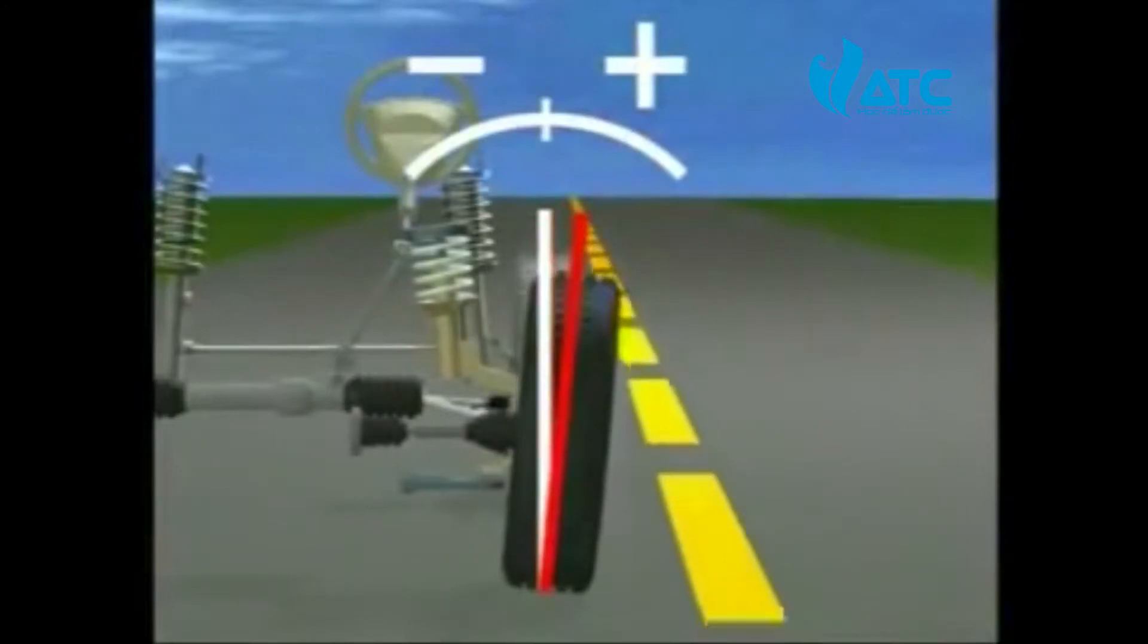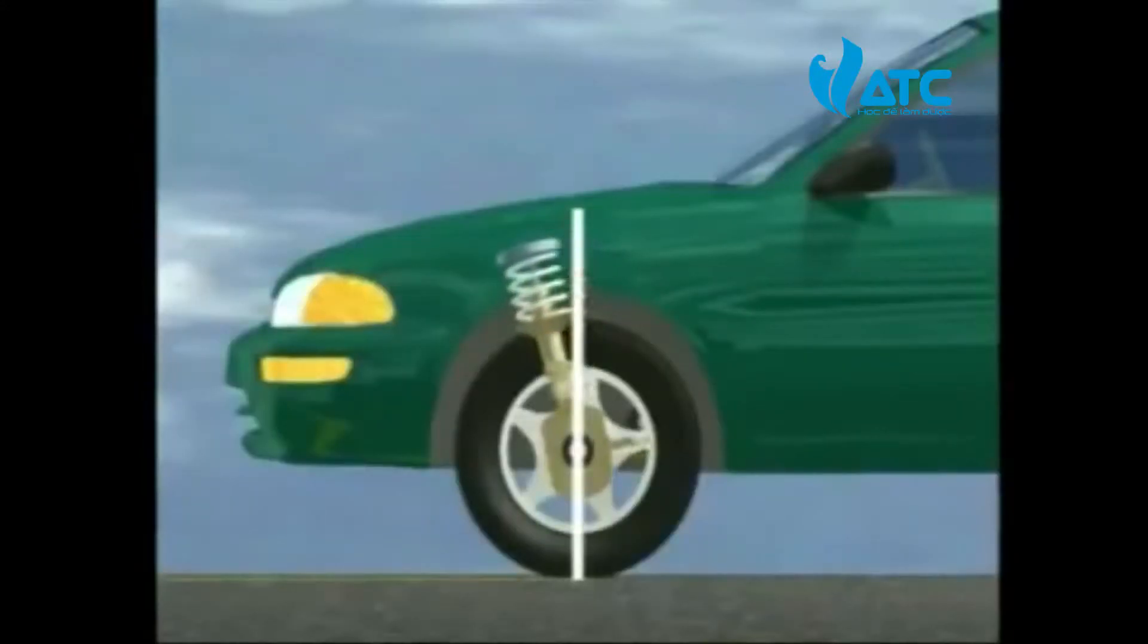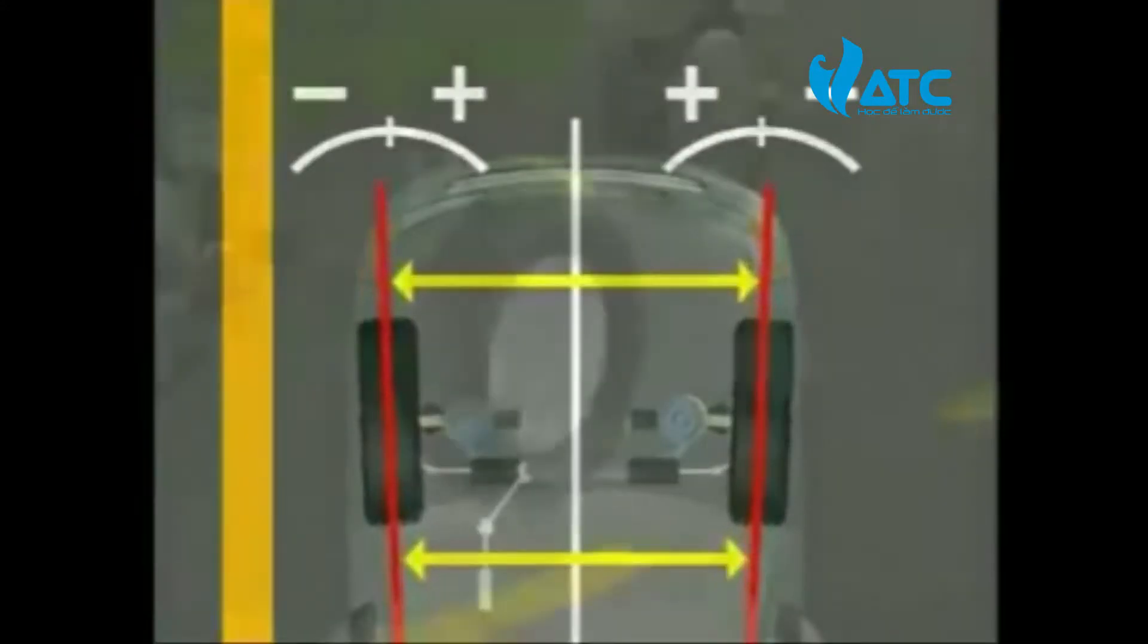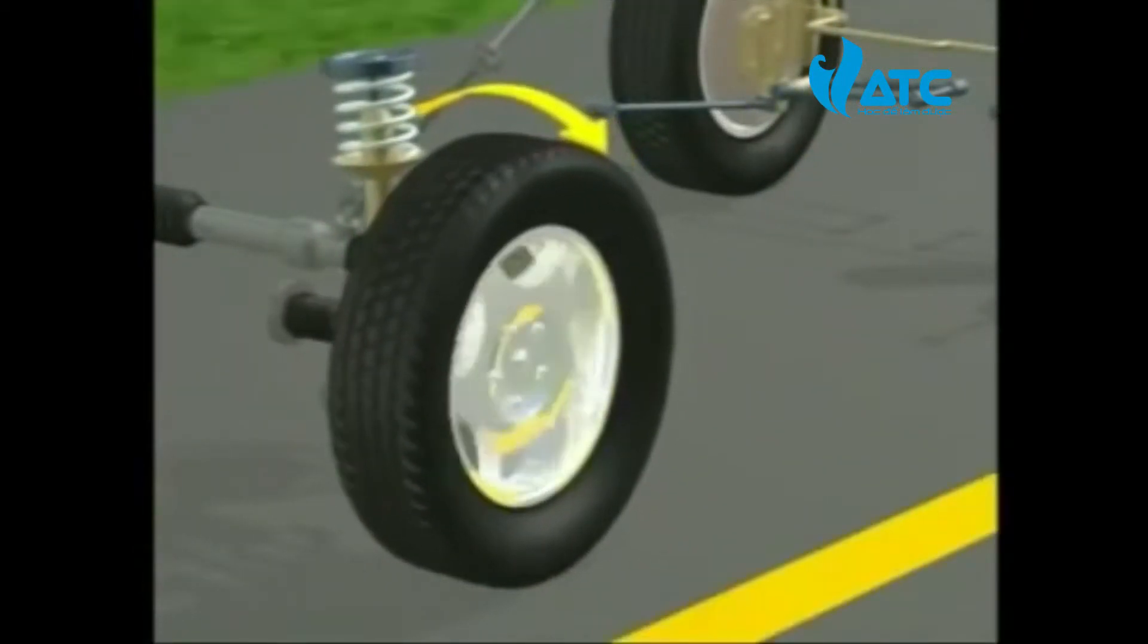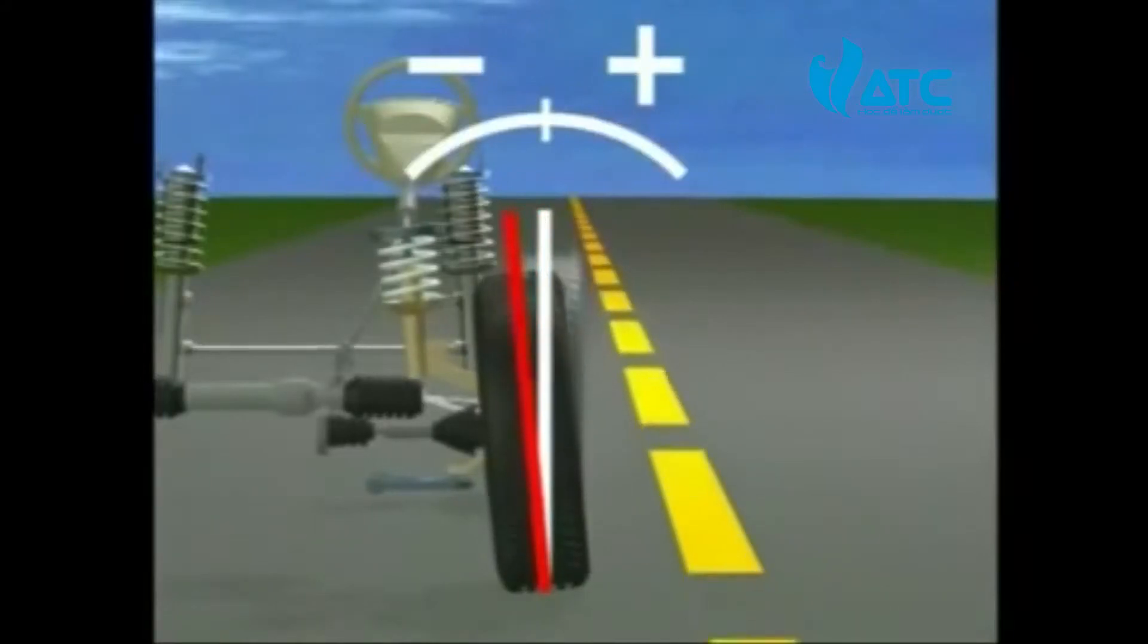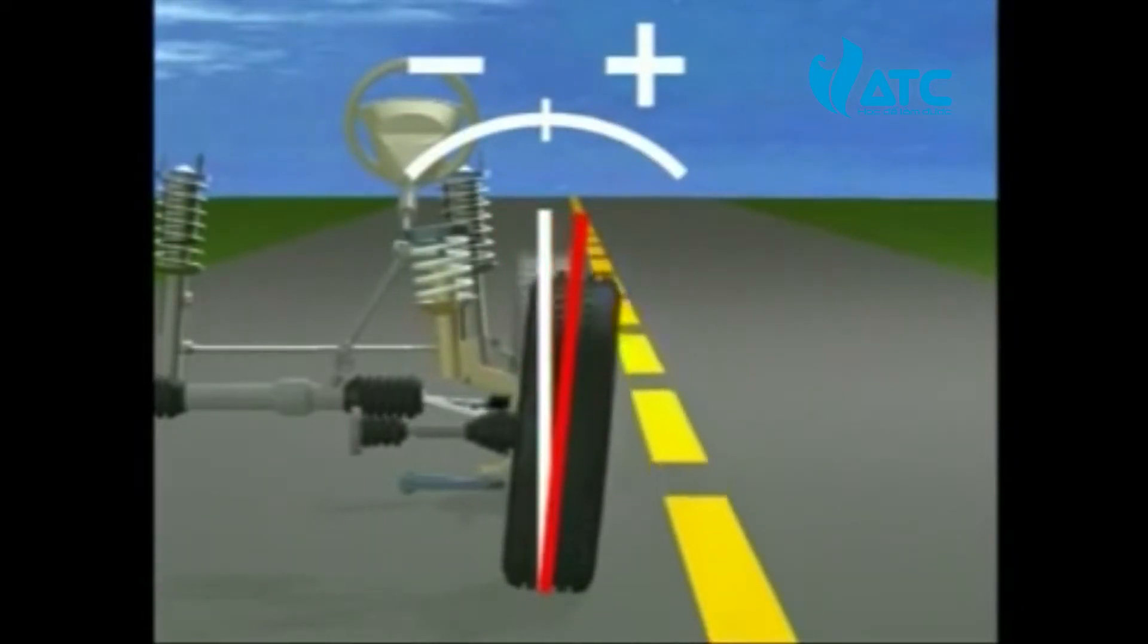Camber is the degree of tilt of the wheel measured at the top. A wheel tilted in towards the engine is negative. Tilted out is positive.